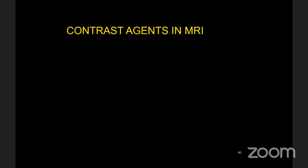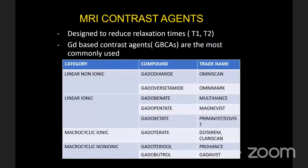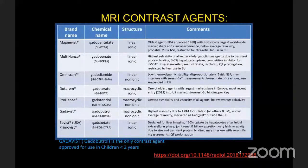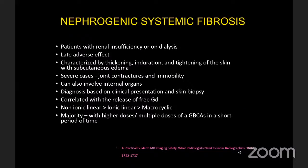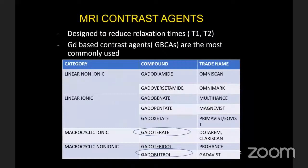Moving on to contrast agents in MRI: these are designed to reduce relaxation times — both T1 and T2 — and we primarily use post-contrast T1 images. Gadolinium-based contrast agents are the most commonly used; they can be linear or macrocyclic, ionic or non-ionic. Gadobutrol is the only contrast agent initially approved for use in children less than two years of age. The adverse effects of MR contrast agents include mild, moderate, and severe reactions; severe reactions include arrhythmias, diffuse edema, and hypoxia, as well as nephrogenic systemic fibrosis (NSF). If given a choice, we should use macrocyclic non-ionic contrast rather than linear contrast.